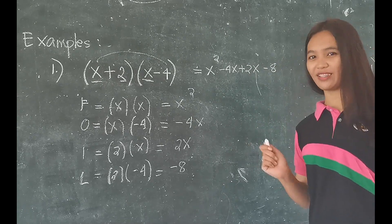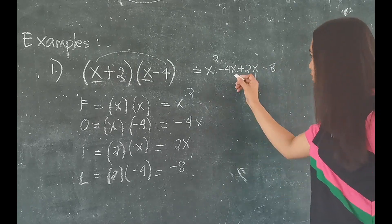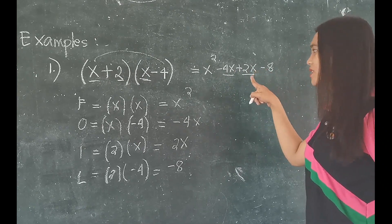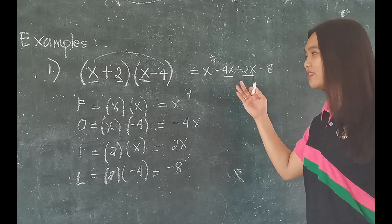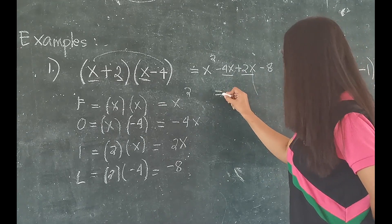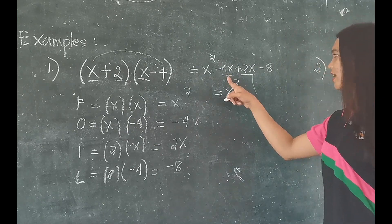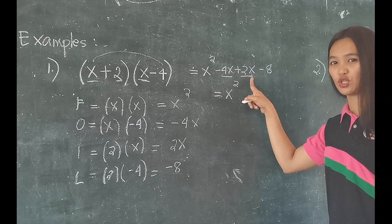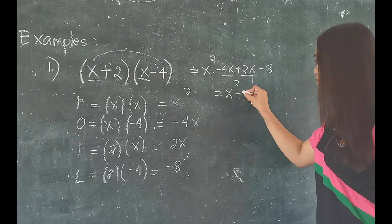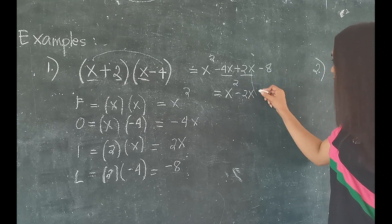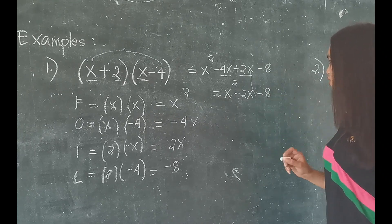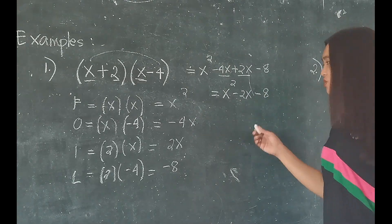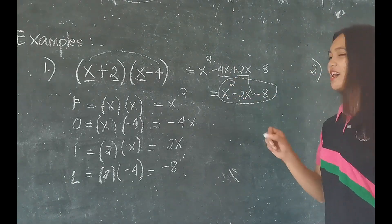Take note, we are not yet done because we still have similar terms. We have negative 4x and positive 2x — we are going to combine them. So we have x squared; negative 4x plus positive 2x is equal to negative 2x; then bring down negative 8. Since there are no more similar terms, this is the final answer.